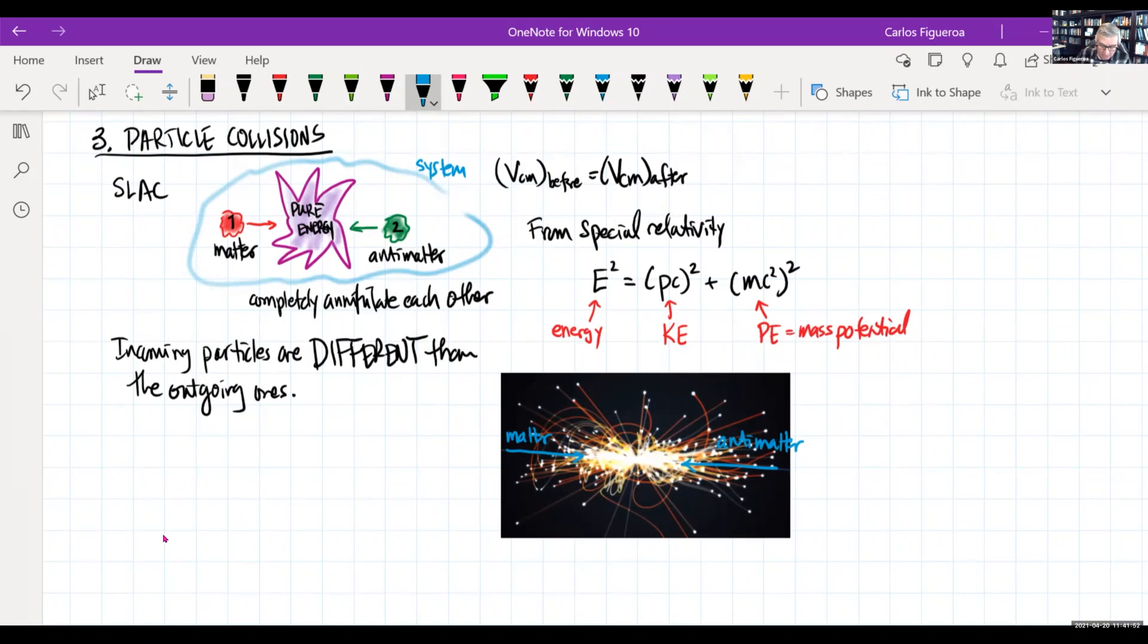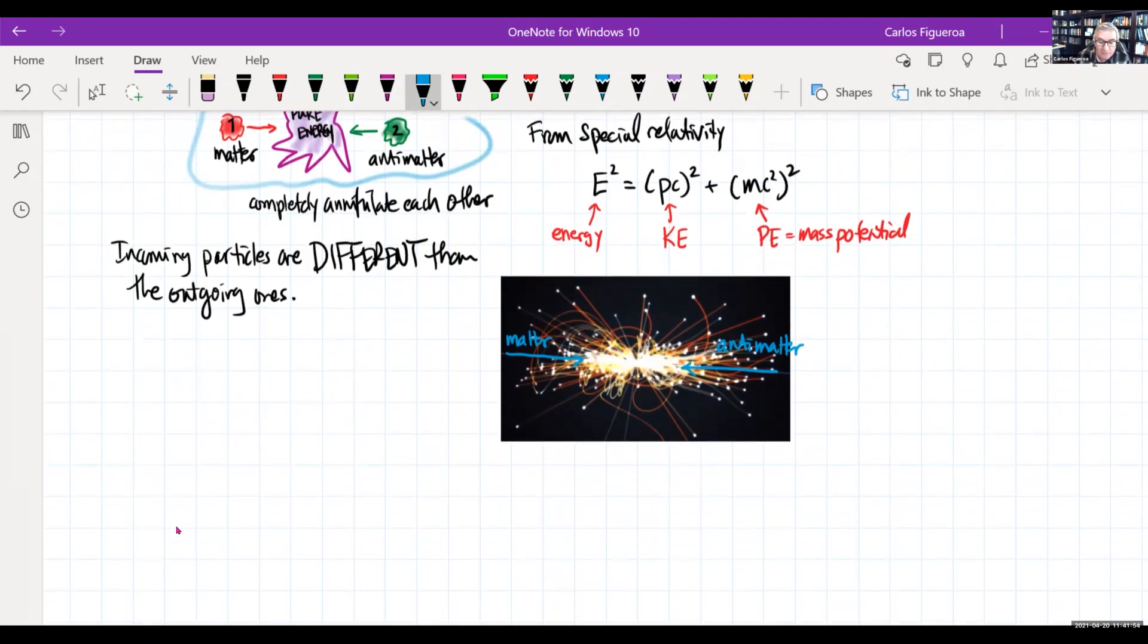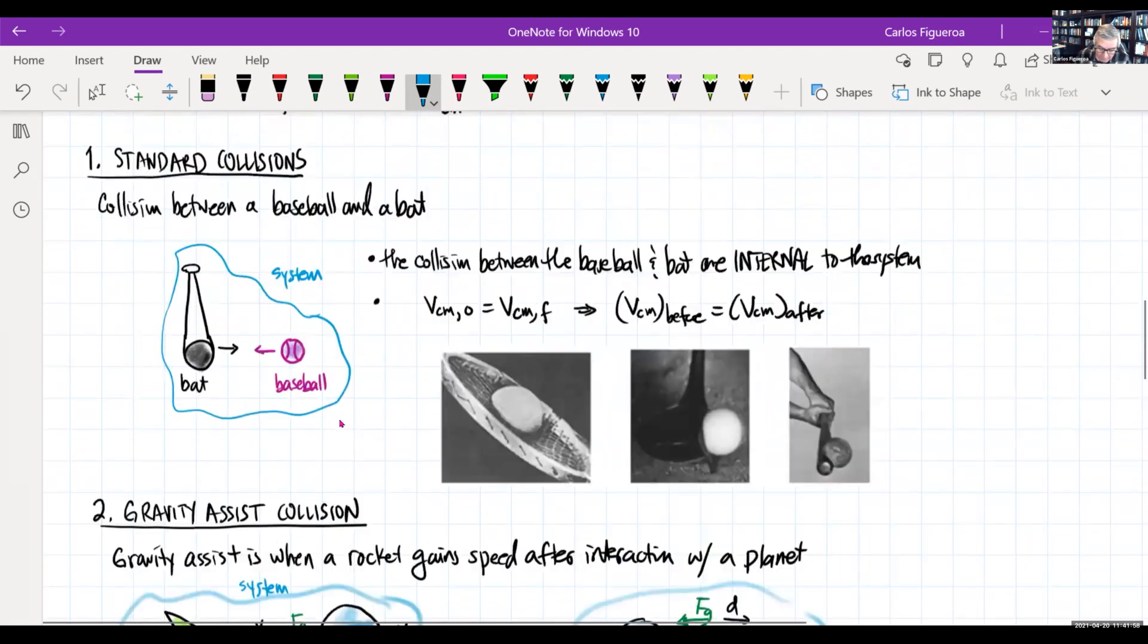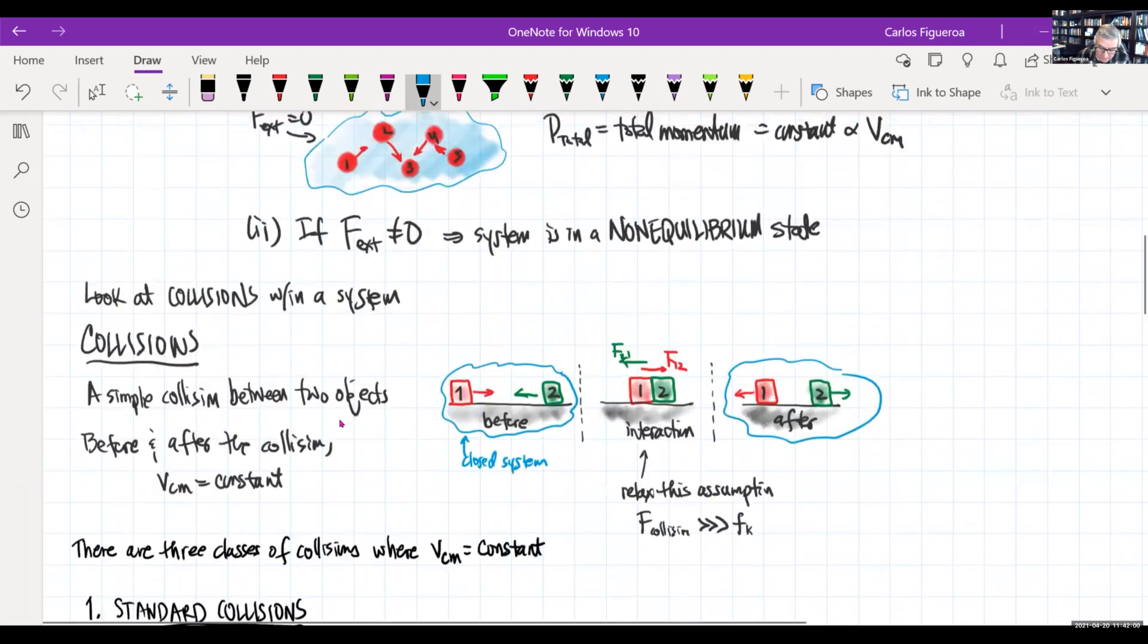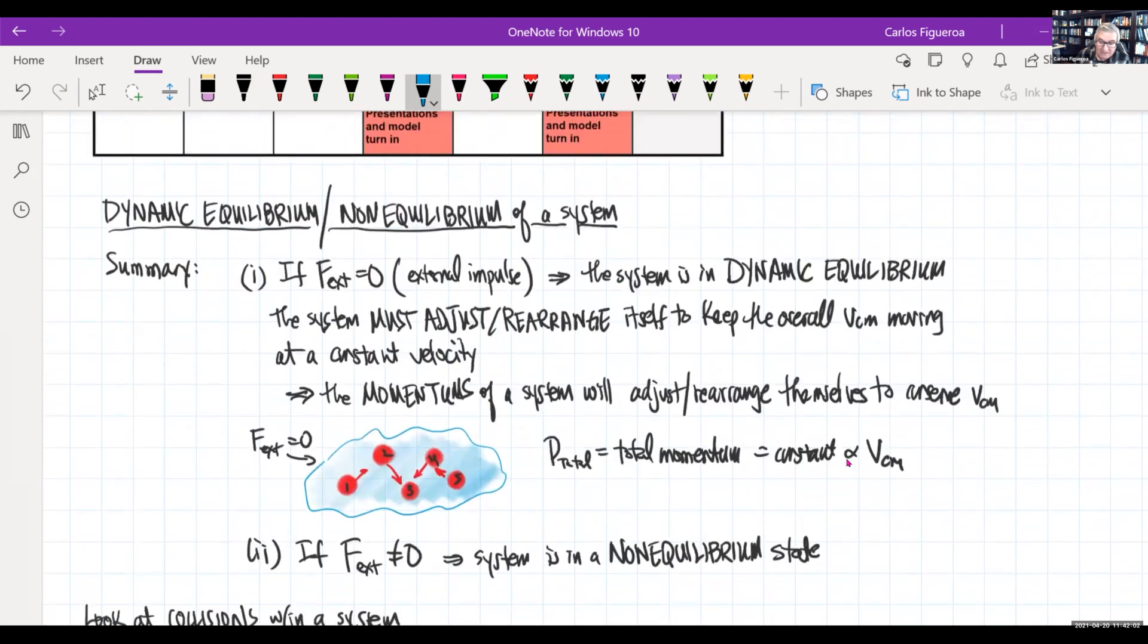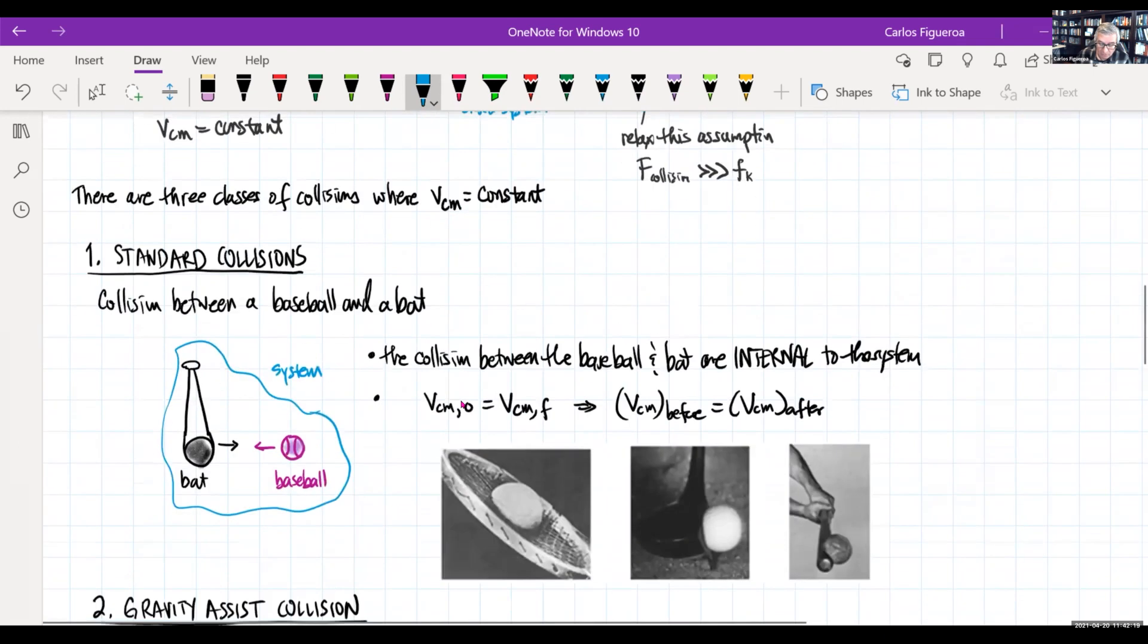Now that we're done with collisions, we need to talk about v_center of mass being a constant. One thing I said is that it's customary to not talk about v_center of mass even though that's the most important thing here. We change the language into momentum. So here we go.